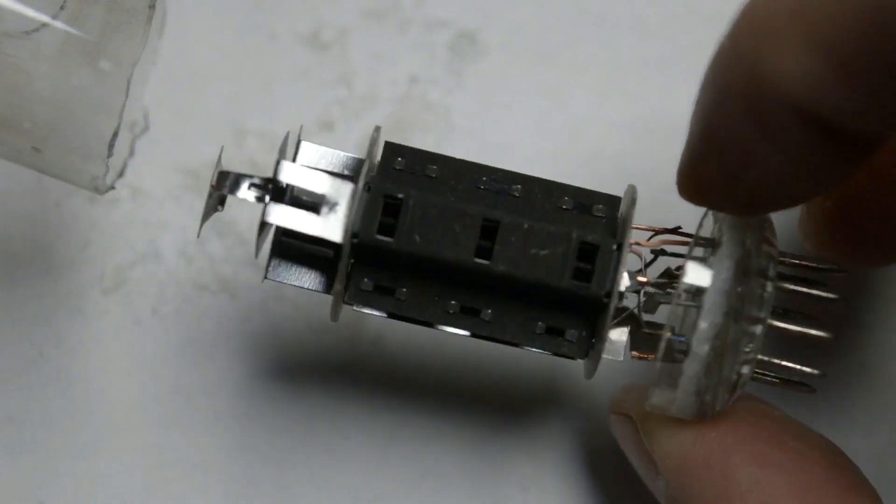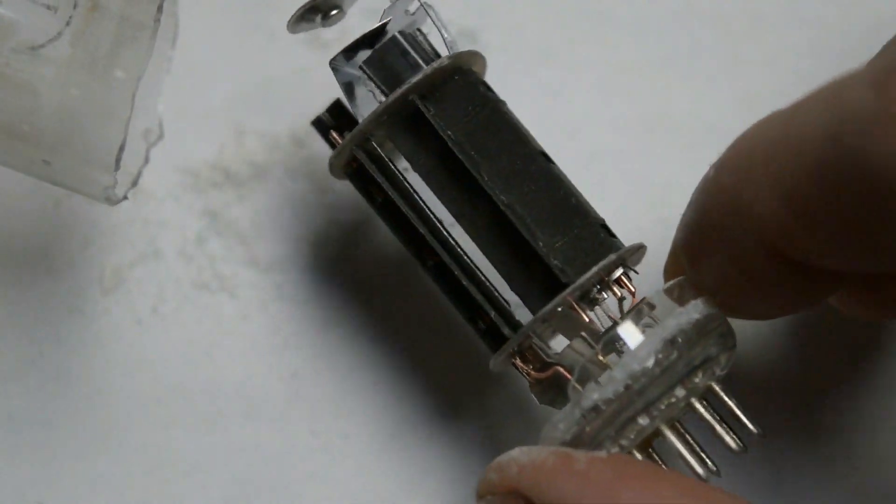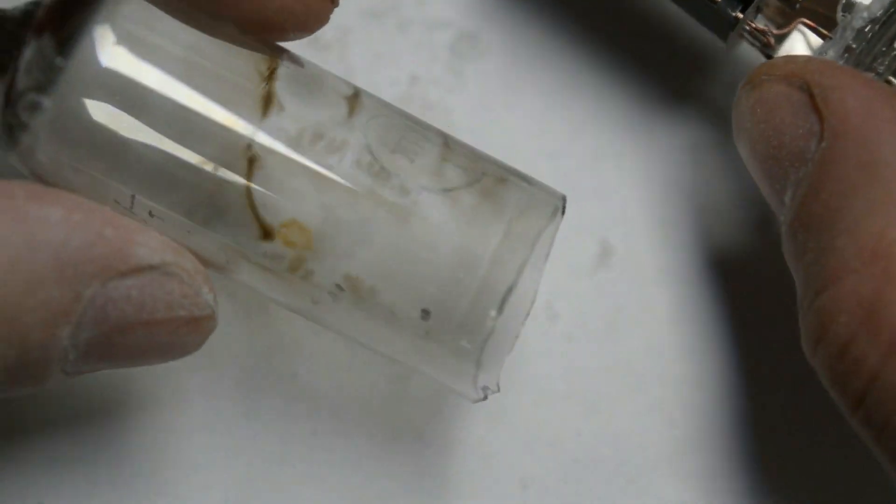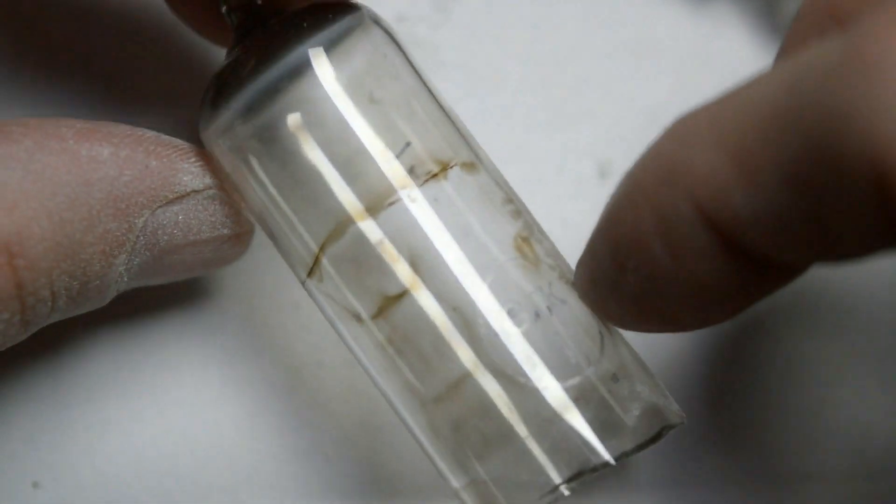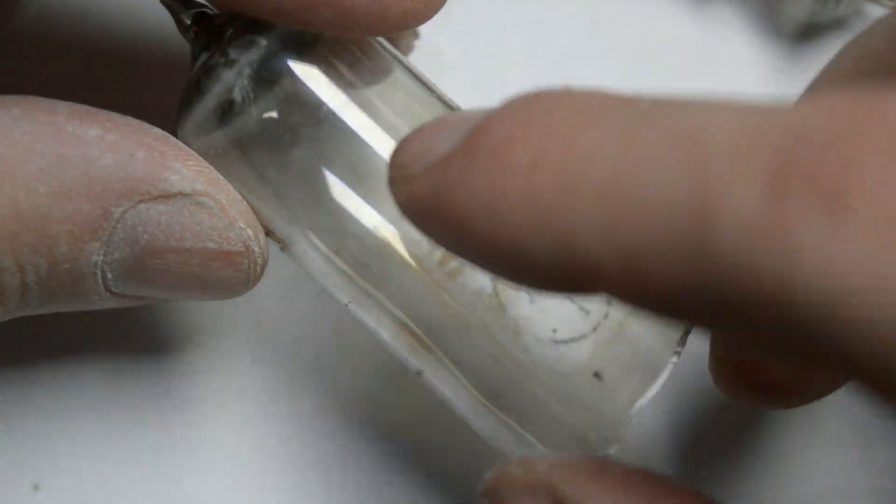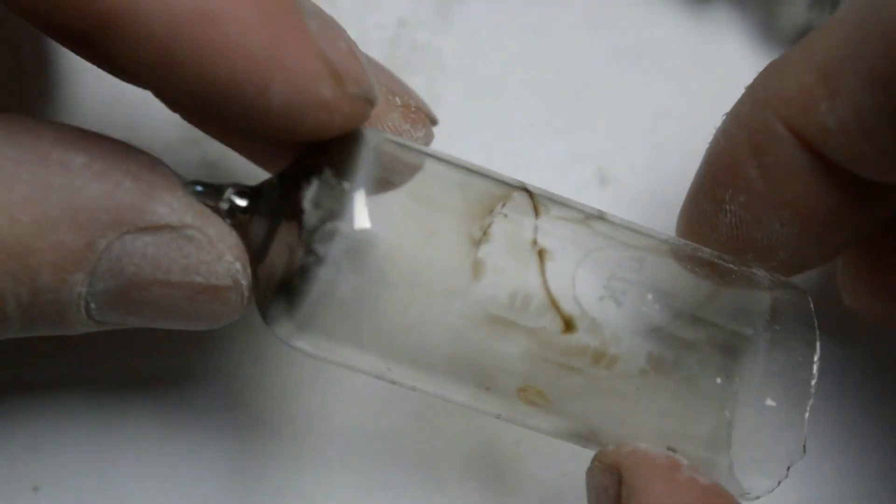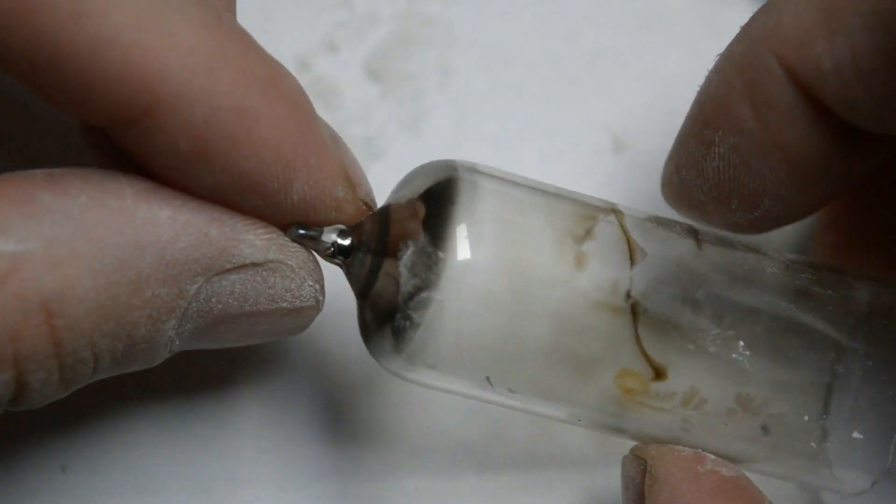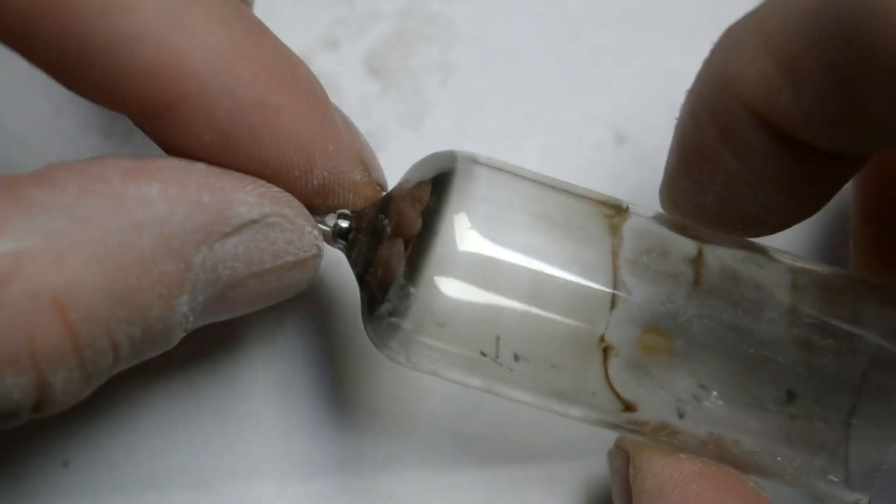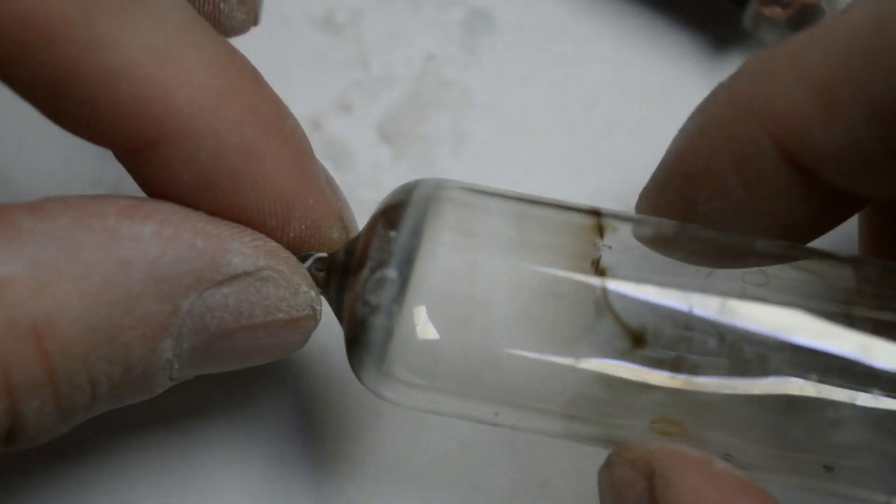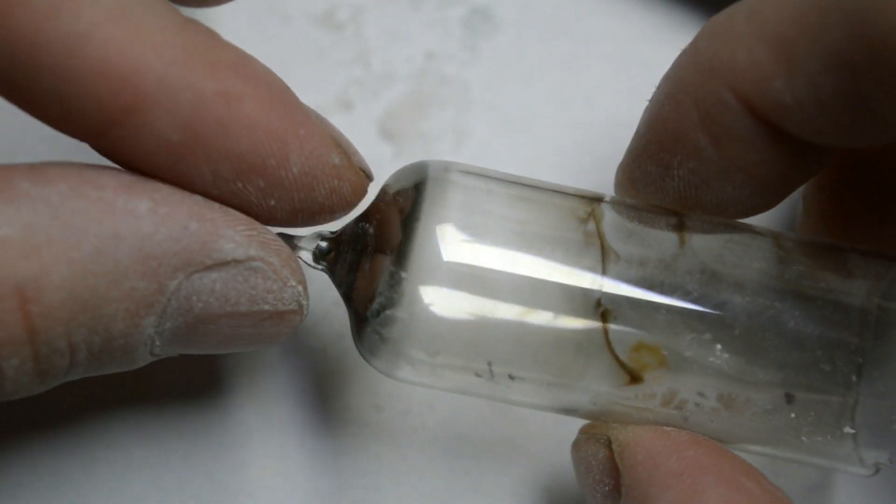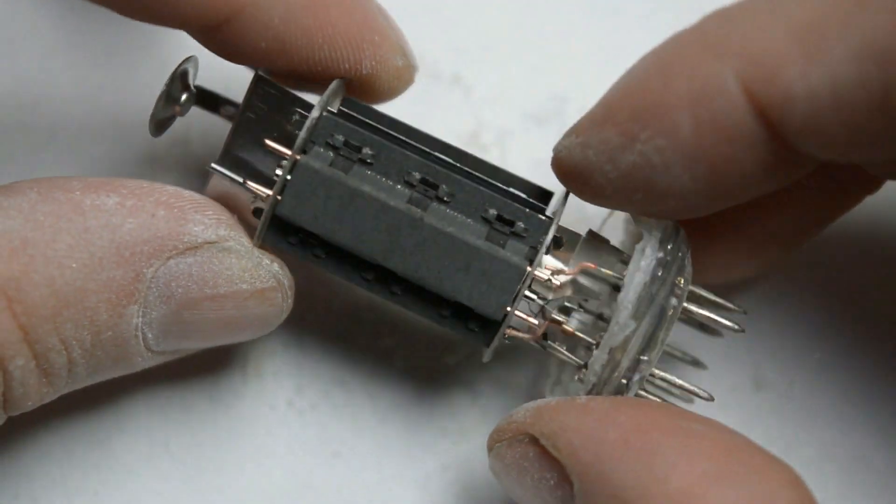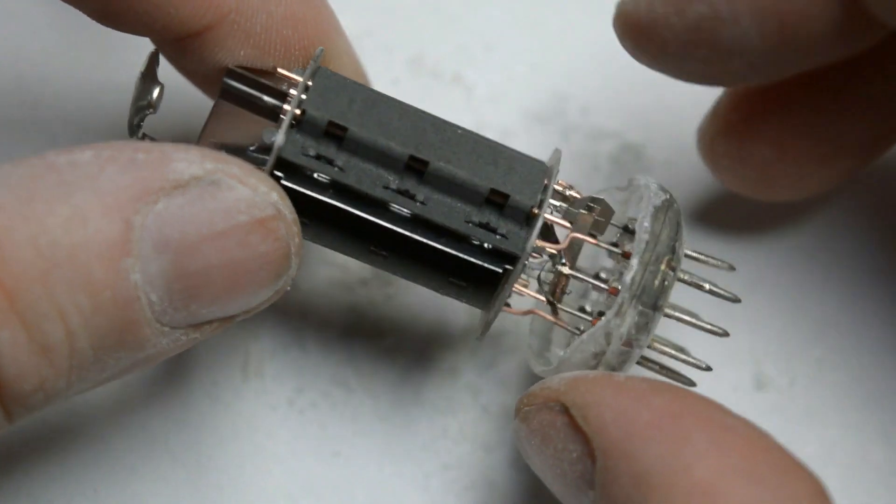This is the 6F3P triode beam tetrode vacuum tube. If you look at the glass envelope, we can see that there's quite a lot of residue on the inside left from the tube operating. And the metal oxide coating on the upper side still hasn't reacted. This is also a very overused tube where this metal oxide layer has cooked over time.